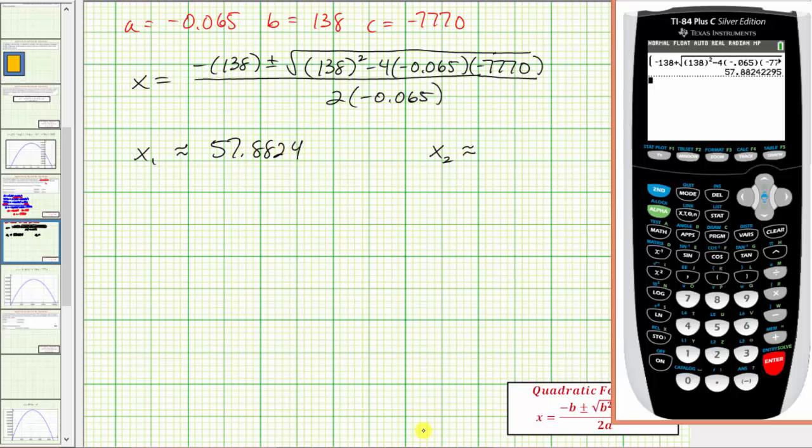Now to find x sub two, we just need to make one change. We need to change this addition sign to a subtraction sign. So instead of entering all this again, we can press second enter, which brings up the previous expression. And now we can arrow back and edit anything that we want. We only have one change here. We want to change the plus sign to a subtraction sign here, and enter. So x sub two is 2065.1945.